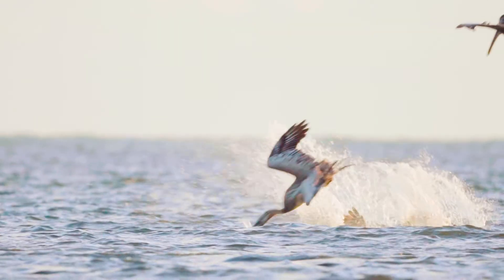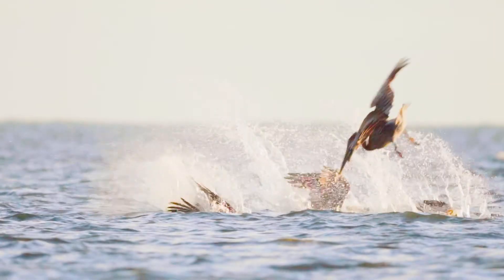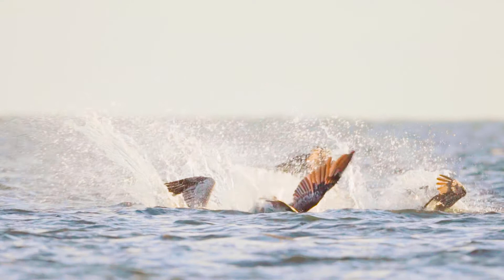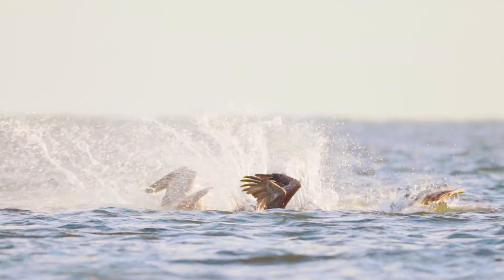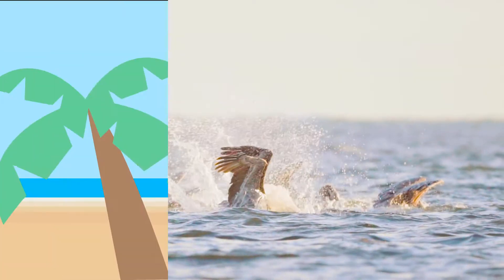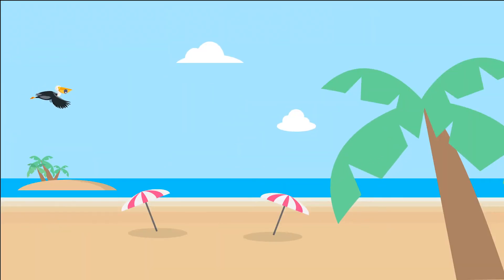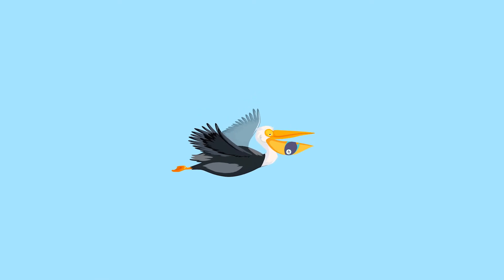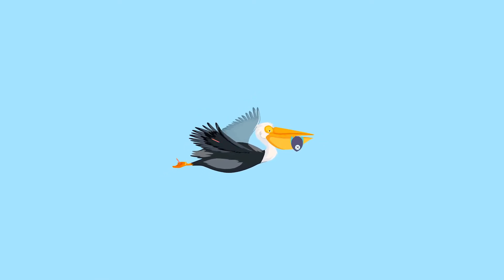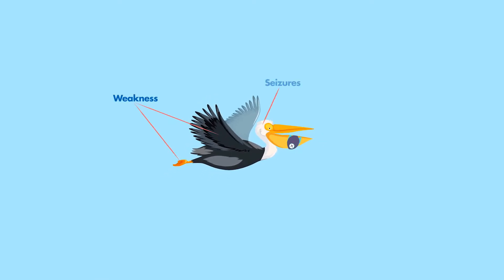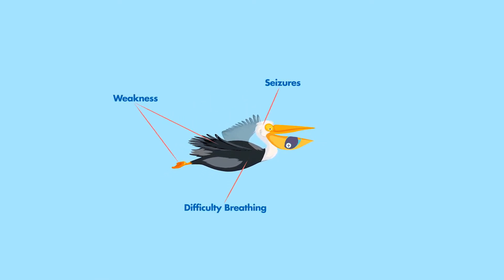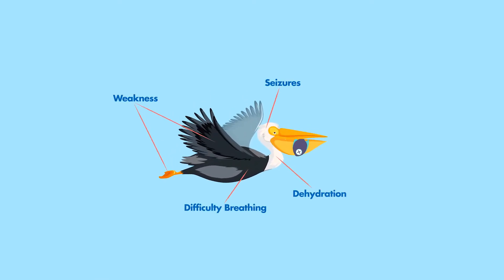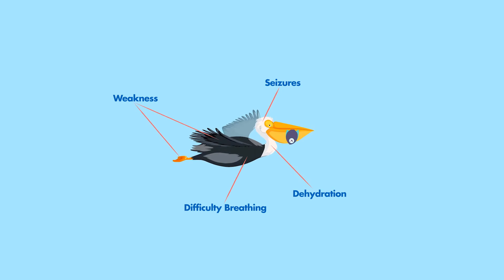Coastal seabirds and shorebirds can often experience mass die-offs during Florida red tide blooms because the birds eat contaminated fish and crustaceans. Sick birds can exhibit weakness, seizures, difficulty breathing, and dehydration.